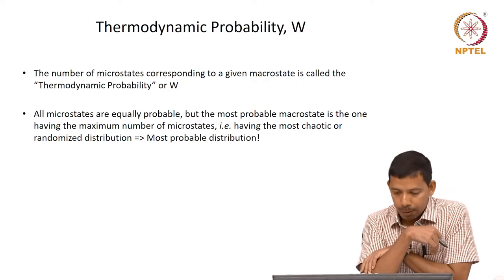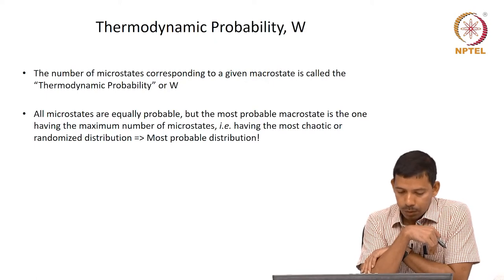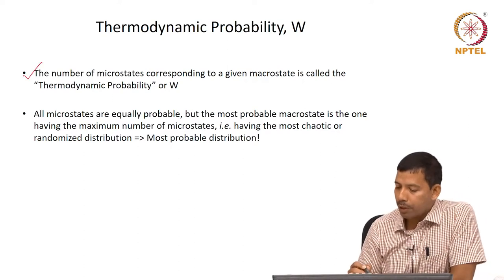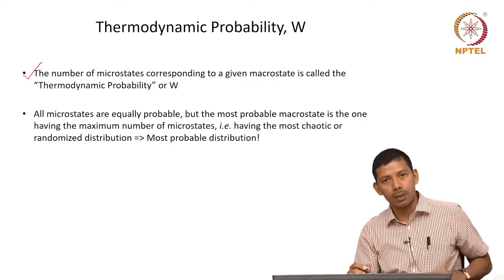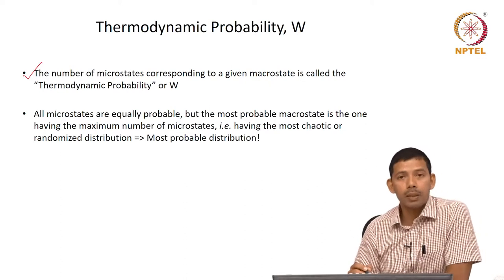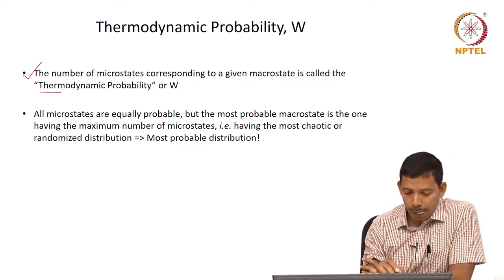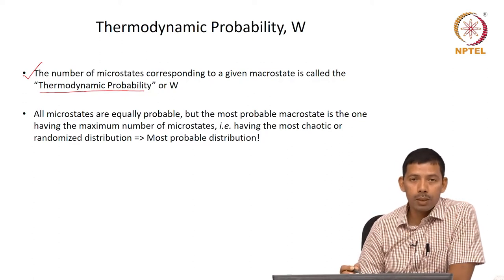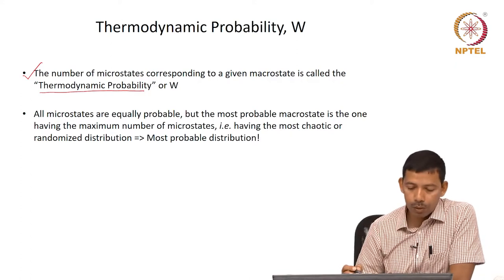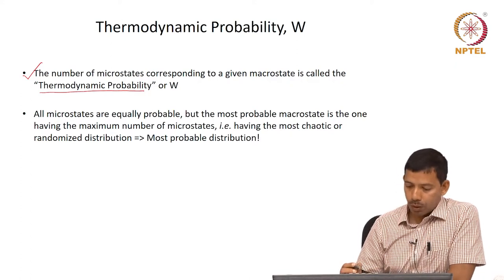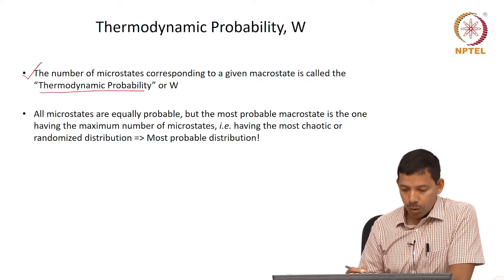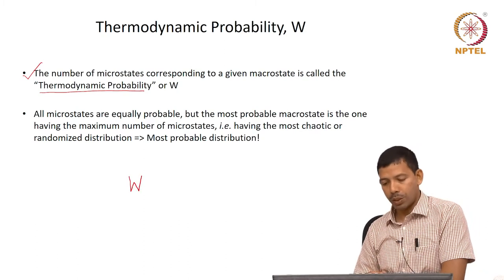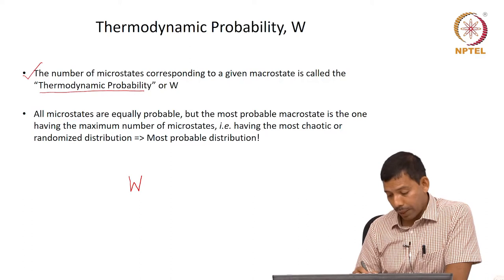Now if we generalize this, we say that the number of microstates corresponding to a given macrostate is called the thermodynamic probability, and that is denoted by capital W. This is a very important quantity in statistical thermodynamics which basically defines the number of microstates corresponding to a given macrostate, and that is called thermodynamic probability.